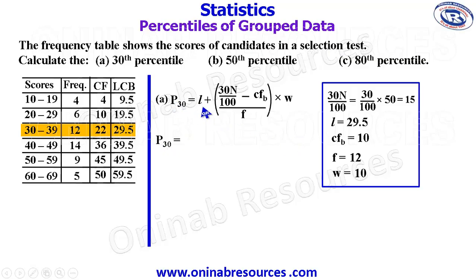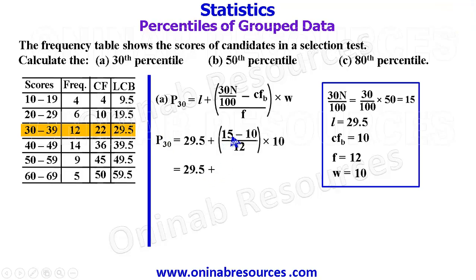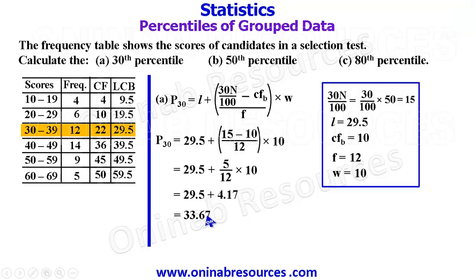We substitute: L is 29.5, plus open bracket, 38N over 100 is 15, minus the cumulative frequency before the 38th percentile which is 10, divide by 12 which is the frequency of the 38th percentile, multiplied by W which is 10. Simplifying: 29.5 plus 5 over 12 multiplied by 10. That is 50 divided by 12, giving 4.17. Adding to 29.5 gives 33.67, representing the 38th percentile of this distribution.